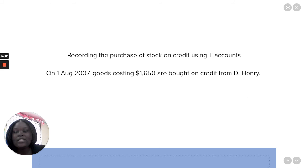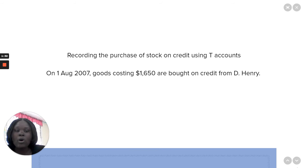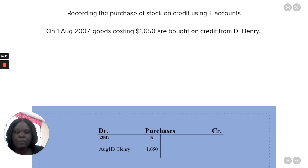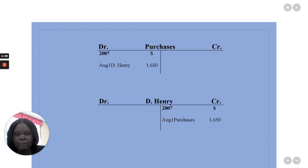Now, let's record the purchase of stock on credit using a T-account. Our transaction reads as follows: on August 1, 2007, goods costing $1,650 are bought on credit from D. Henry. Using the T-account, we need to open a Purchases Account and a D. Henry account.